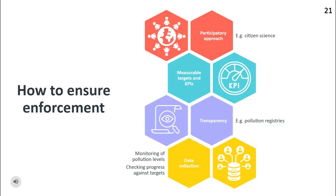How can we ensure enforcement? Firstly, inclusivity and participation in monitoring, such as citizen science, should be encouraged. Secondly, relevant agencies should propose measurable targets and KPIs. The third way is to increase transparency, such as through pollution registries. Last but not least, data must be collected systematically. Relevant agencies should monitor pollution levels and check progress against targets.